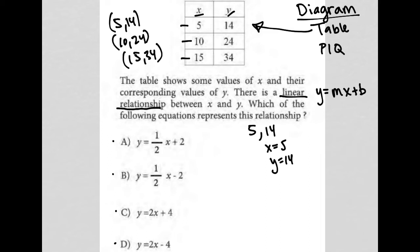So if I replace X with 5, one half times 5 becomes 5 halves plus 2. And the question is, is that all equal to 14? Is 5 halves plus 2 equal to 14? No, it is not. So A is gone.